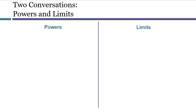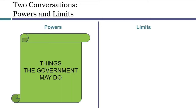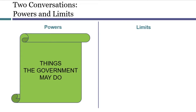Let's start by imagining that various parts of a constitution create lists of things that the government may do and may not do. Powers are the list of things that the government is allowed to do, and limits are the list of things that the government is not allowed to do. Why do we need two different lists? It's because sometimes the powers and the limits are focused on different concepts, so they fit together differently.